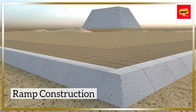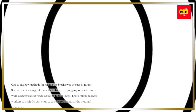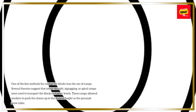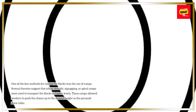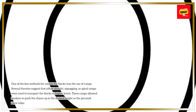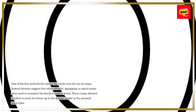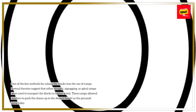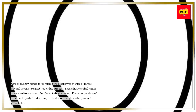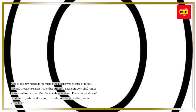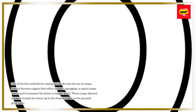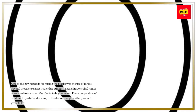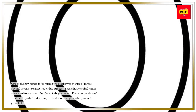One of the key methods for raising the blocks was the use of ramps. Several theories suggest that either straight, zigzagging, or spiral ramps were used to transport the blocks to higher levels. These ramps allowed workers to push the stones up to the desired height as the pyramid grew taller.